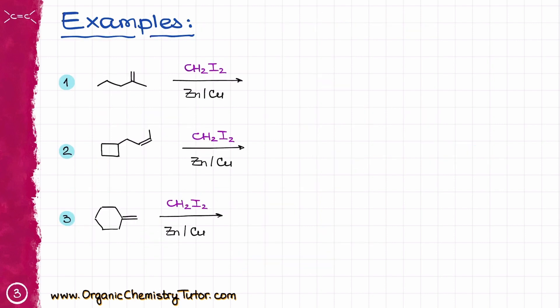So here are a few examples. In the first case, I'm going to be adding a three-membered ring across my double bond right here, this double bond, giving me a product that looks like this. Notice that this product is not chiral, so I'm not going to be making any stereoisomers in this case.